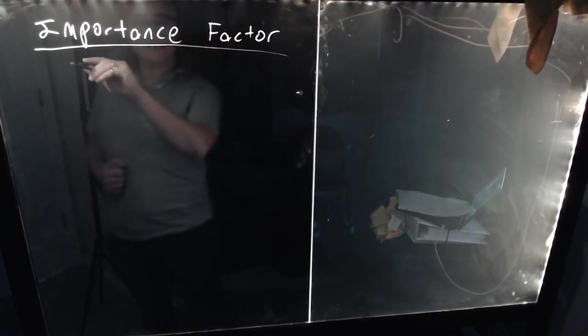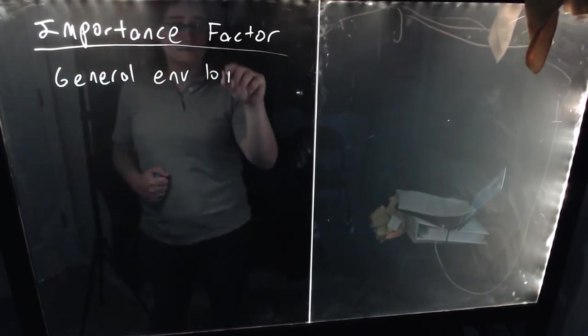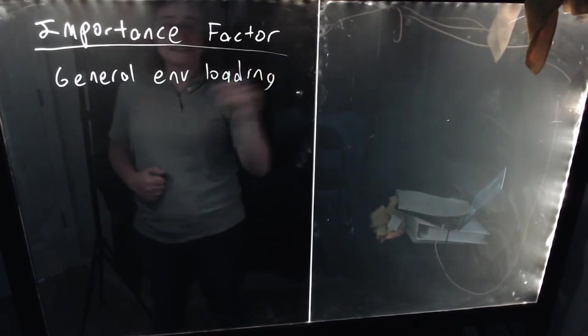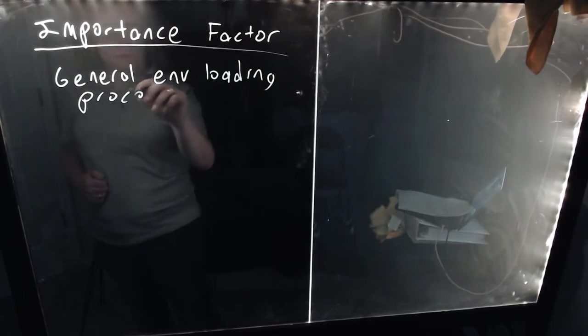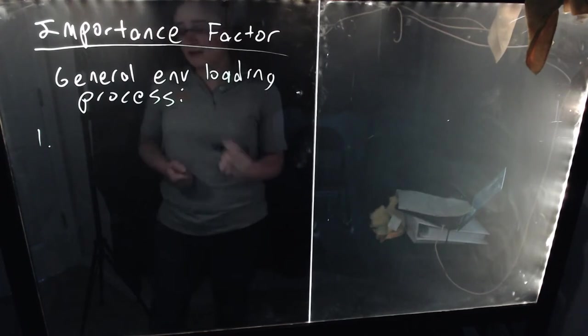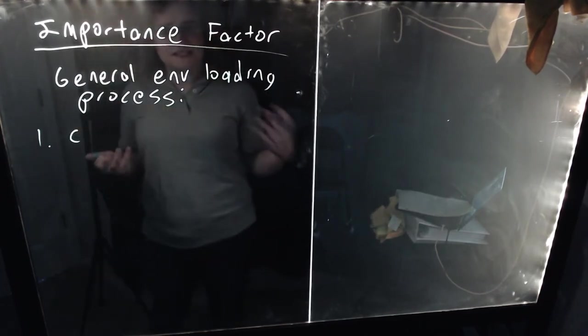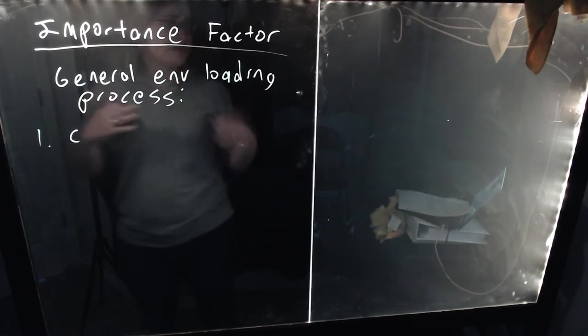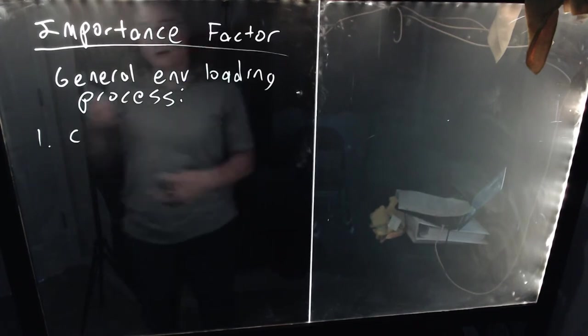So the general environmental loading process in ASCE 7, and most codes is like this. These are for loads that originate from nature. This isn't something you actually do in the design process. This is baked into the provisions you'll find within the chapters of ASCE 7. You do this when writing the code, not when applying the code.